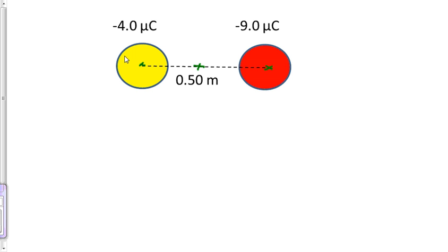Let's look at the yellow charge here first, the negative four microcoulomb charge. It will cause an attraction of that positive test charge to go this way. We'll call that electric field one and that will be in the negative direction, going left.